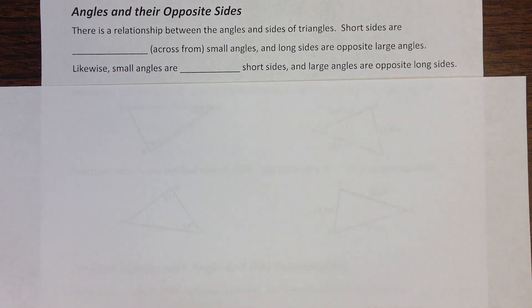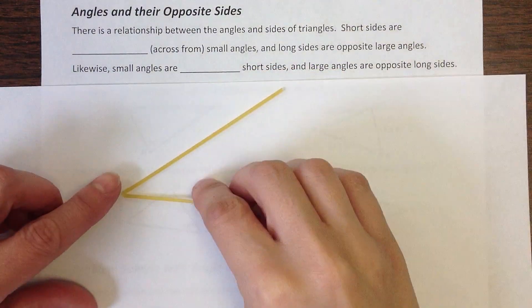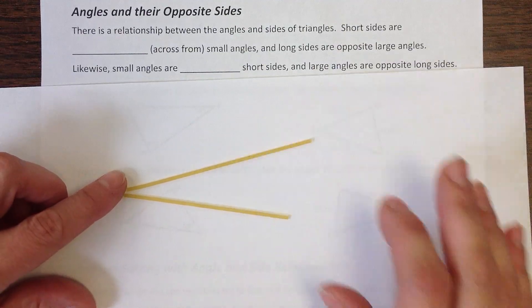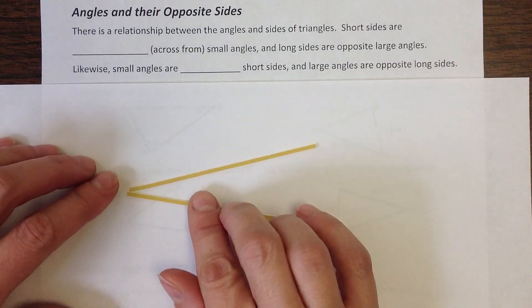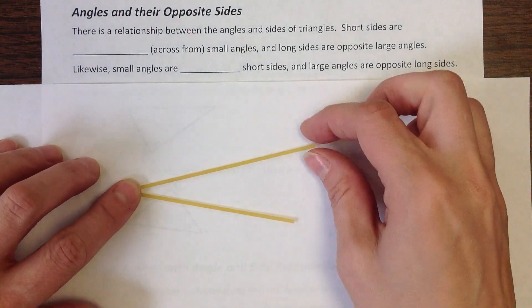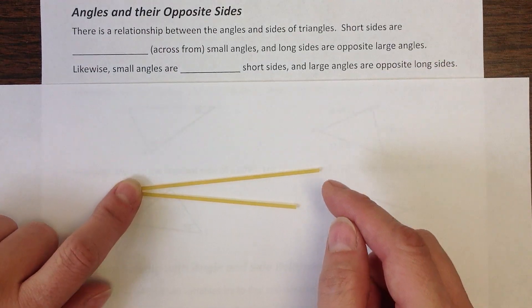I want to talk about the relationship between angles and their opposite sides. I want you to pretend that this is a triangle, that there's an elastic over here, because I'm going to change the size of this triangle.